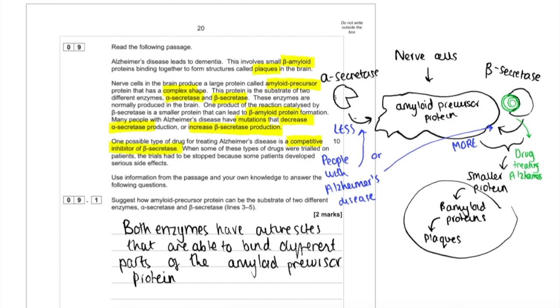One possible type of drug for treating Alzheimer's disease is a competitive inhibitor of beta secretase. When some of these drugs were trialled on patients, the trials had to be stopped because some patients developed serious side effects. Use info from the passage and your own knowledge to answer the following questions.